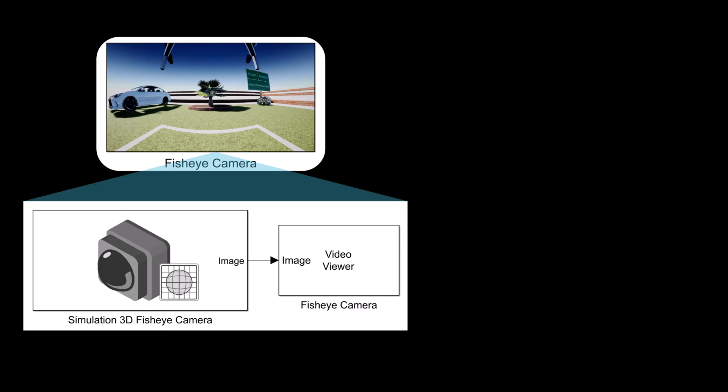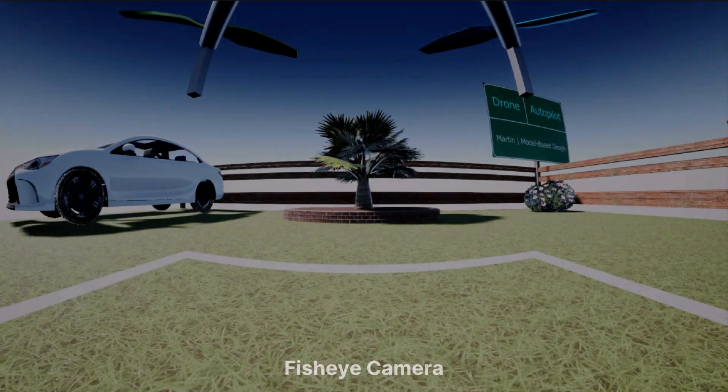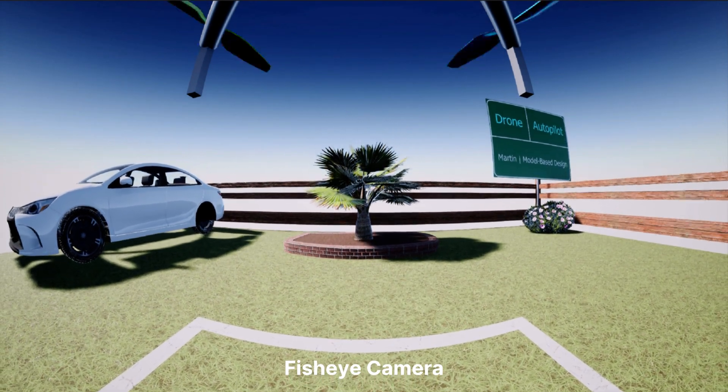Let's move on to the fisheye camera model. In Simulink, the fisheye camera model simulates the wide field of view characteristic of fisheye lenses, which capture a hemispherical or near-hemispherical view, with a field of view of up to 195 degrees. The model incorporates factors such as lens distortion, projection methods and resolution to accurately represent the camera's behavior. Here are the simulation results from the fisheye camera.